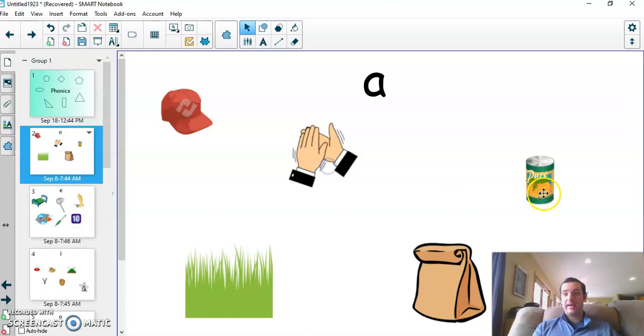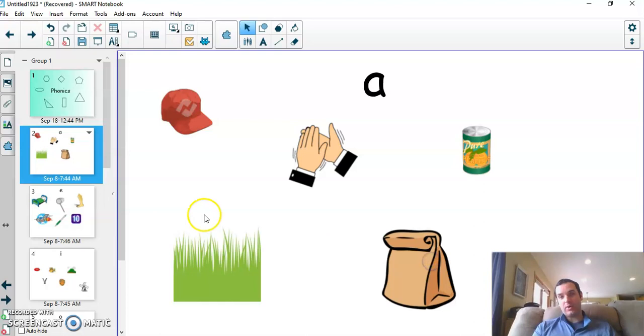We have a, this would be a, so hat, clap, can, grass, and we have bag or sack.